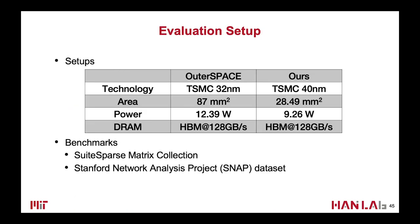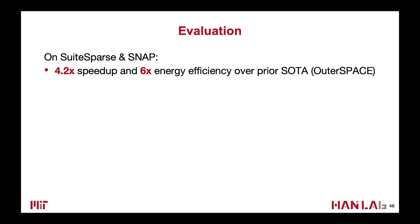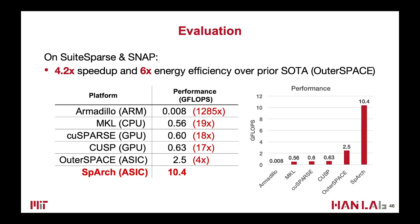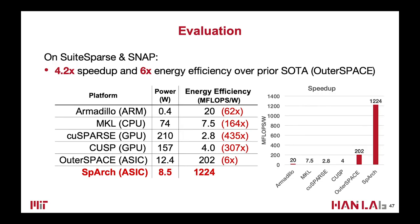For evaluation, we synthesize our design and get the power and area numbers. Comparing to the baseline, we have smaller area and lower power consumption. We evaluate the performance on the Salesforce matrix collection and Stanford Network Analysis Project dataset. Our design can achieve around 10 gigaFLOPS, which is 4x faster than the Outer Space baseline and around 20x faster than Intel CPU and GPU. We also compare with the DRAM Armadillo library, and our design is around 3 orders of magnitude faster. Our energy efficiency is around 1 gigaFLOP per watt, which is 6x better than Outer Space and several hundred times better than other general-purpose platforms.